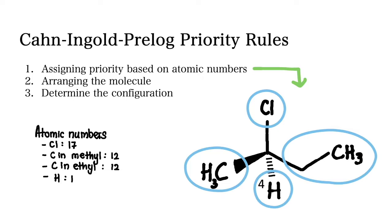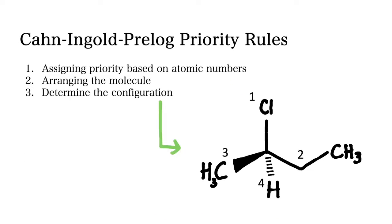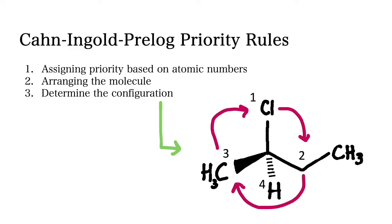Now let's move to the second rule — arranging the molecule. This step entails positioning the molecule so that the lowest priority group is pointing away from you. If needed, you mentally rotate the molecule to achieve this orientation. Then for the third step, we observe that the order of the priority groups has chlorine first, ethyl second, and methyl third. We do not consider hydrogen because it's going into the page. When we consider the direction from highest to lowest priority, the order is clockwise.